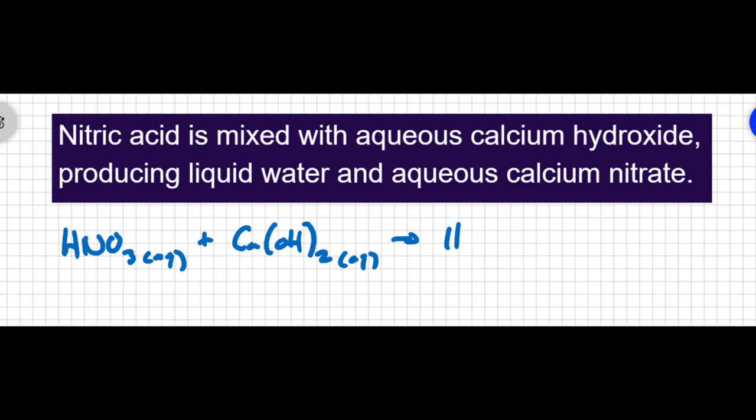That's going to produce water, and the water is going to be a liquid, and calcium nitrate. We already said that calcium forms a plus two charge, and nitrate is NO3 with a one minus charge. So this will be Ca(NO3)2, and we're told that that is an aqueous solution as well.